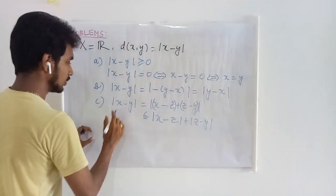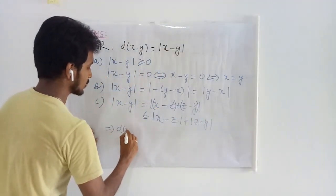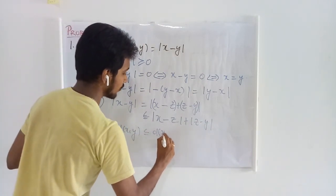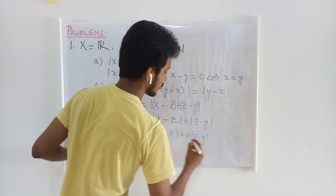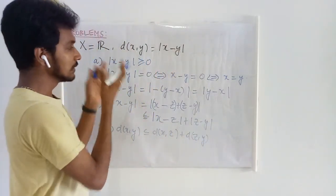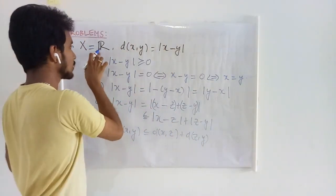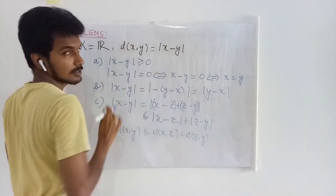If this is d of x y, then this is d of x z and this is d of z y. And this proves this is a metric space with respect to this metric.